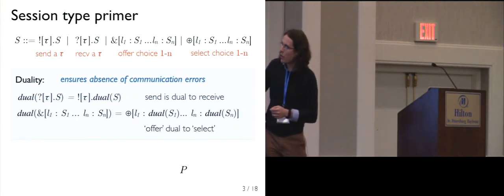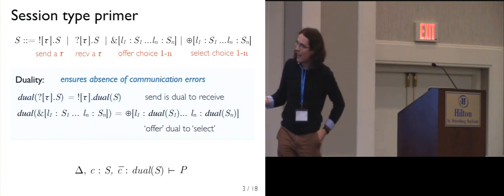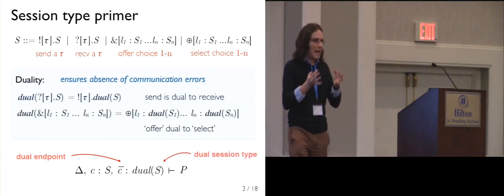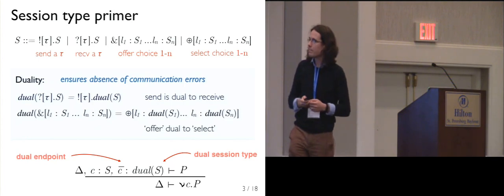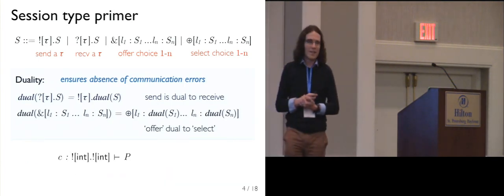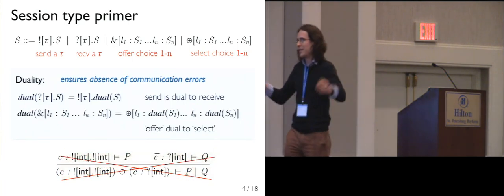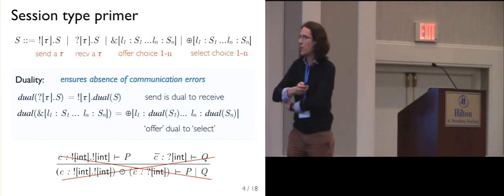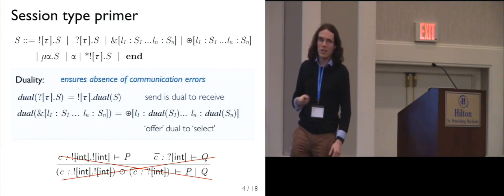If I've got a process P and I use one end of a channel in an S-like way, and I use the other end — noted by C-bar — in a dual way, then these behaviors line up and we have safe communication. Here's an example of something that's wrong: a process P that sends two integers paired with a process Q that on the opposite side receives only one integer — this is ill-typed, because every send needs a receive, and the parallel composition operator checks duality on both sides. We also have recursion in session types, a notion of replication, and the type 'end', which says we're not going to use the channel anymore.